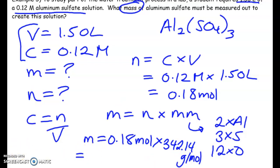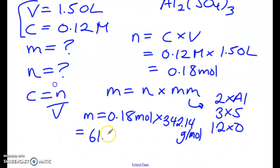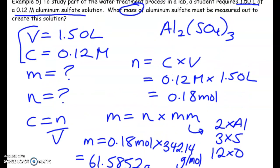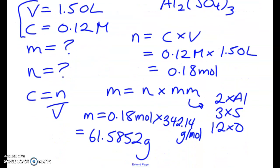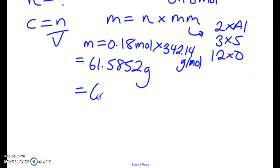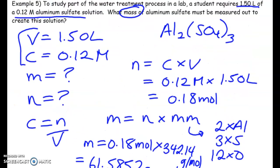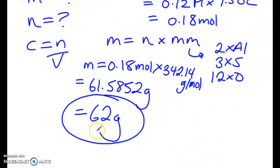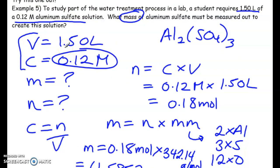So you should have a mass value here of 61.5852 grams. And our sig figs is only 2. So actually this rounds to 62 grams. Right? So what does this mean? This translates into, if I wanted to make this, if I wanted to make 1.5 liters with this concentration, I would have to weigh out 62 grams of aluminum sulfate and dissolve it in water until we hit 1.5 liters.